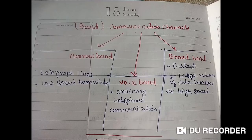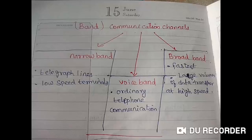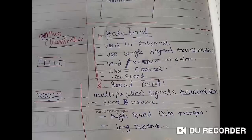Narrow band is used for telephone lines and low-speed terminals. Voice band is used for telephone communication. Broadband is the fastest communication channel, used for large volume and high-speed data transfer — about 90% of connections use broadband. Another classification uses baseband or broadband.